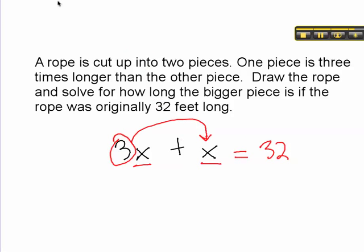And when you combine like terms, three, you have to imagine there's an imaginary one. Whenever you have nothing in front of the x, it's an imaginary one. You have 4x equals 32, and you divide by four, and again, x equals eight.